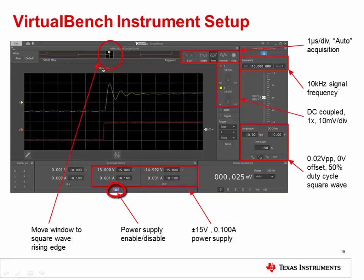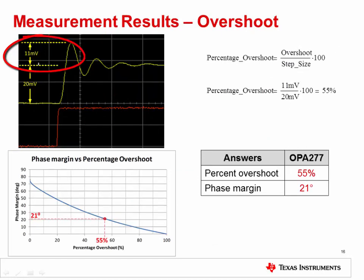Press the power button to turn on the power supply rails. Move the display window to the rising edge of the square wave. This allows you to observe the overshoot and ringing of the op amp output. Use cursors to measure the amount of overshoot. The expected measurement results are shown here. The measured overshoot of 55% results in a phase margin of 21 degrees. Your results may vary slightly.